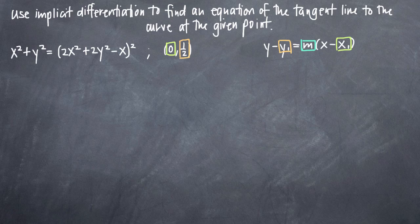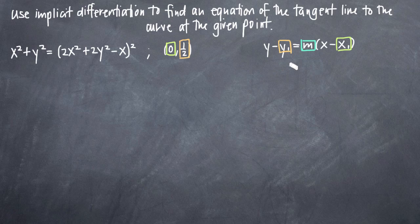We're going to go at this problem in a couple of steps. The first thing we're going to do is use implicit differentiation to find the derivative of this equation. Then our second step will be to plug in the point (0, 1/2) to our derivative, and that will give us m. Once we have m, we can plug in x₁, y₁, and m to our equation of the tangent line.